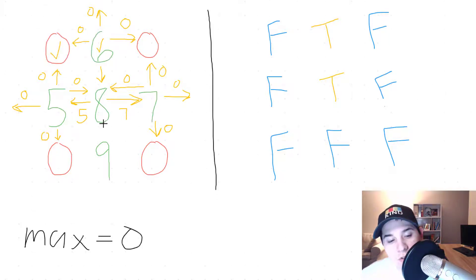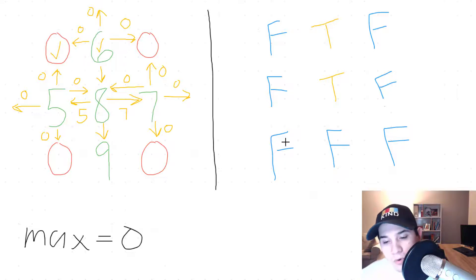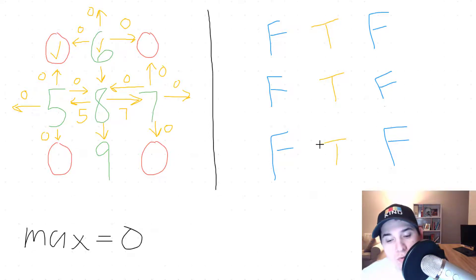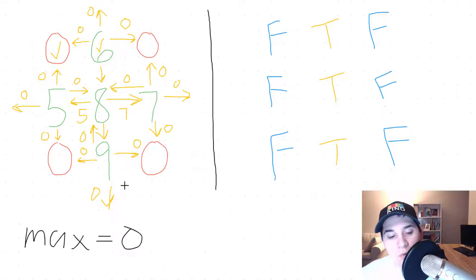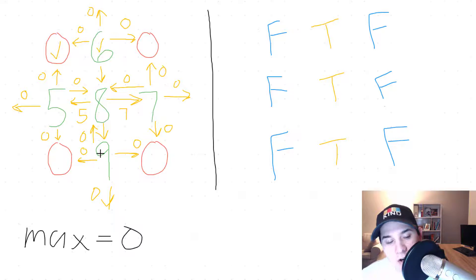Finally, for node 8 we check down and visit that position, marking its Boolean value as true. From that cell: left is 0, above is already visited (return 0), right is 0, down is 0. Maximum of four 0s is 0, plus current cell value 9 — we return 9 back to node 8.